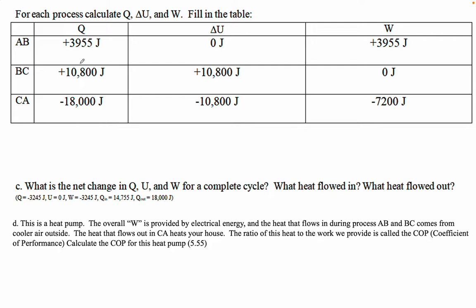So 3955 plus 10,800 plus 18,000 is... oh, what just happened? 3955, 10,800, oh, minus, whoops. Let's try that again. I'll subtract the 18. Okay, there it is. So this is negative 3245.